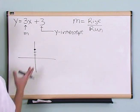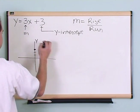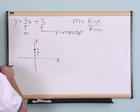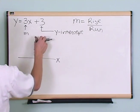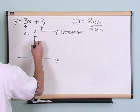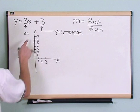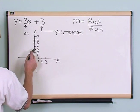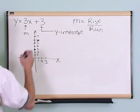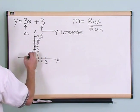So if I want to graph y equals 3x plus 3, I take the y-intercept of 3 and put it on the y-axis. Then I use the slope, which is 3 — meaning rise 3 units, run 1 unit to the right. That gives me my second point, and I can draw the line straight through both points.